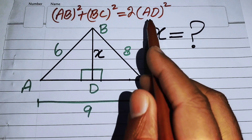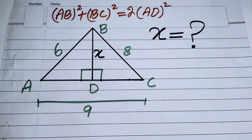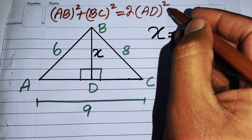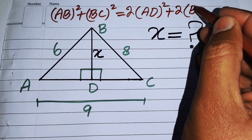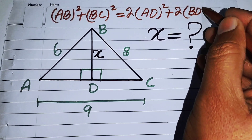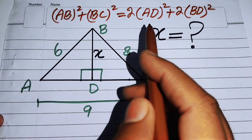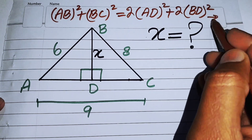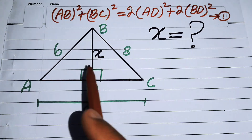Together with twice the square on the median, and here the median is BD, so we add plus twice of BD². This completes the Apollonius theorem, and we label this as equation number one. We will use this theorem to find the median BD, denoted by x.